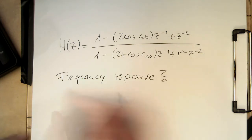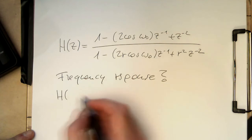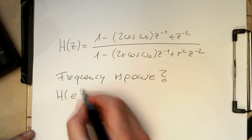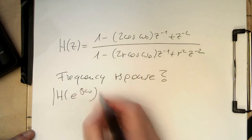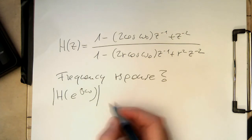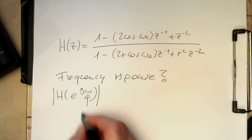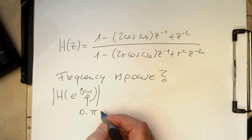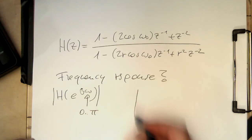That's obviously the same as always. So let me do an e to j omega. And looking at the absolute value of this. And having omega running from zero to pi to see the frequency response.